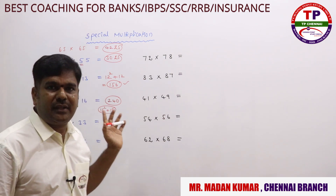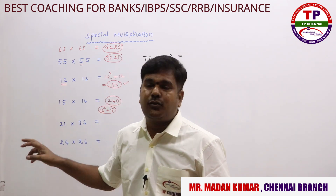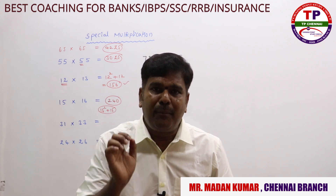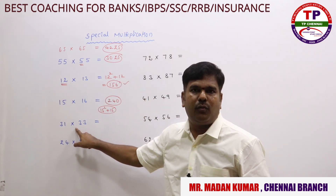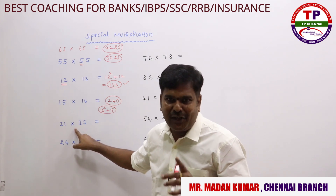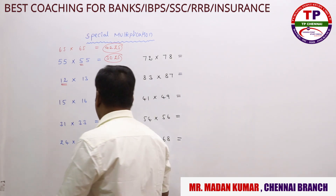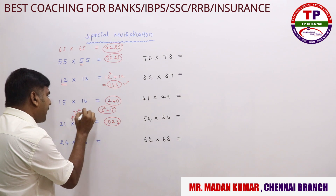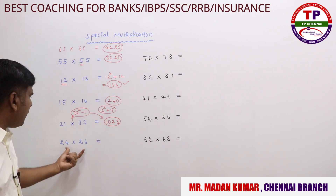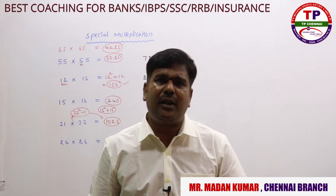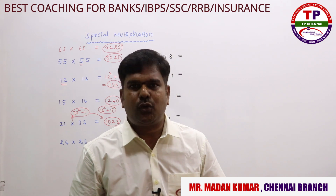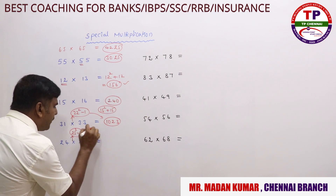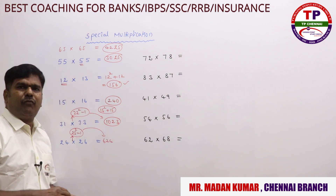Now for 31×33, the difference is 2. Whenever the difference is 2, take the middle number squared minus 1. The middle number here is 32. What is 32²? 1024. So 1024 − 1 = 1023. That's the answer. Similarly, for 24×26, the difference is 2, the middle number is 25, and 25² = 625, so 625 − 1 = 624.